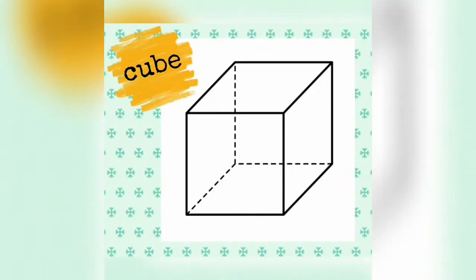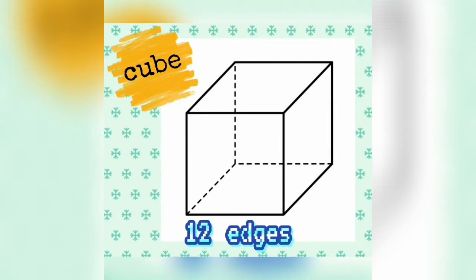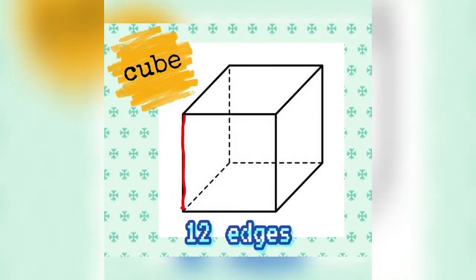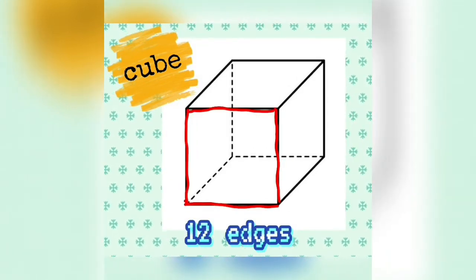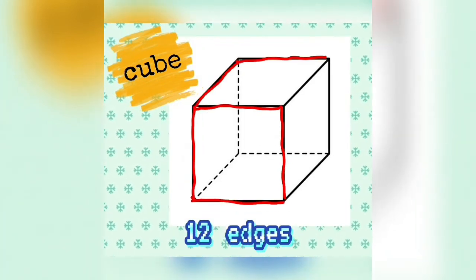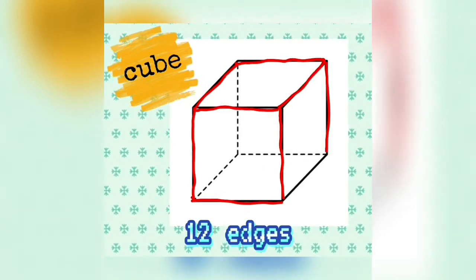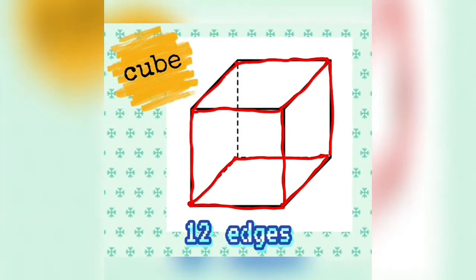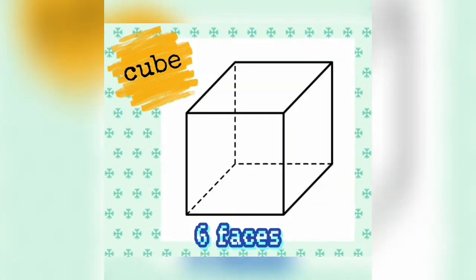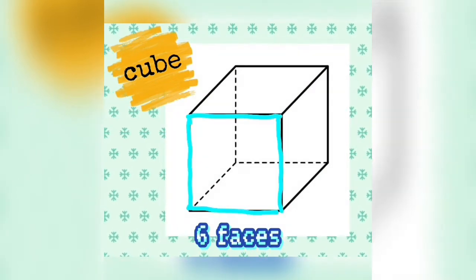This is a cube. It has 12 edges — one, two, three, four, five, six, seven, eight, nine, ten, eleven, twelve. It has six faces.